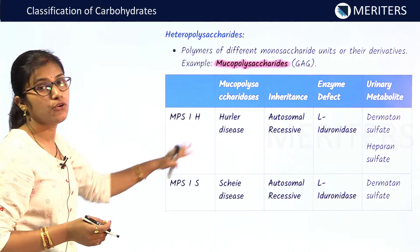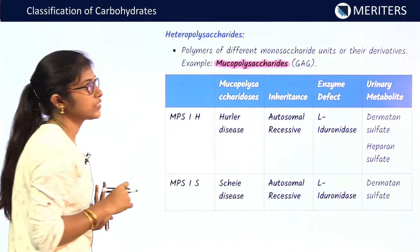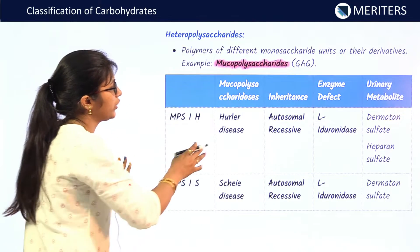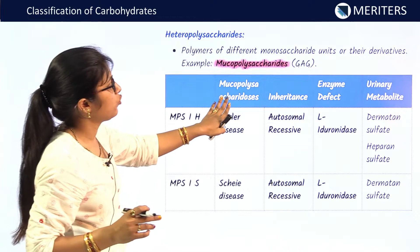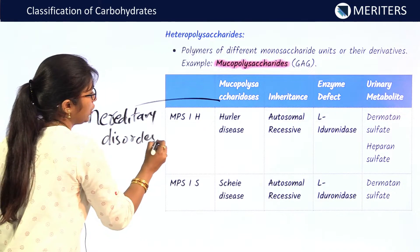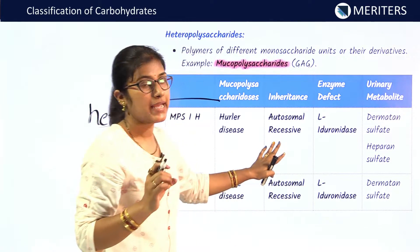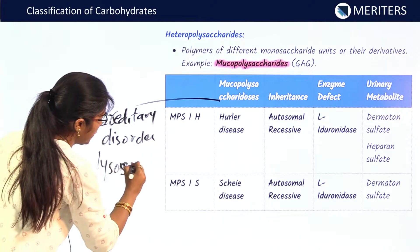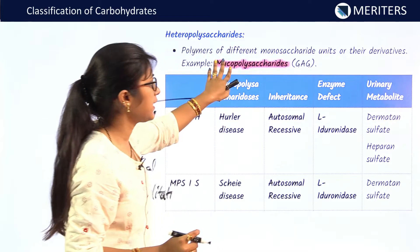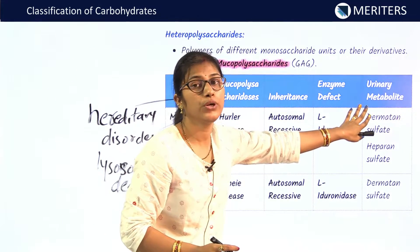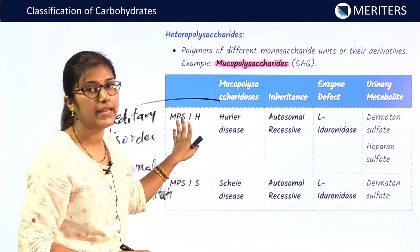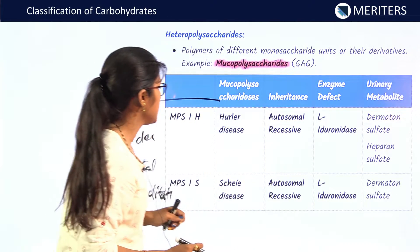Heteropolysaccharides, or heteroglycans, are polymers of different monosaccharide units or their derivatives. Examples include mucopolysaccharides or GAGs (glycosaminoglycans). Mucopolysaccharidoses are hereditary disorders that occur due to defects in enzymes involved in lysosomal degradation of polysaccharides. You should know the classification, inheritance, enzyme defect, and urinary metabolite for each type.